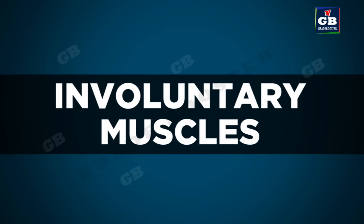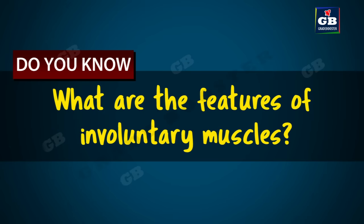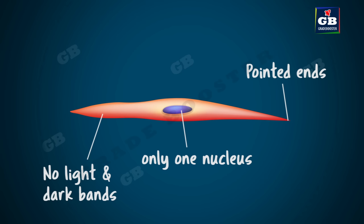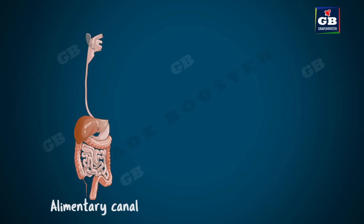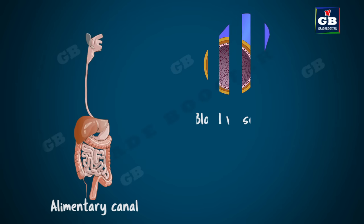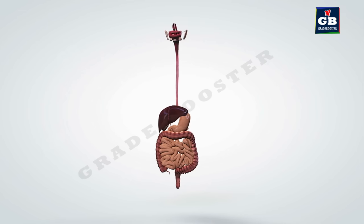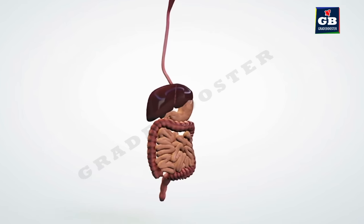Another type of muscular tissue is involuntary muscles. These muscle movements are not under our will, which is why they are called involuntary muscles. The cells are long with pointed ends — spindle-shaped and uninucleated, meaning only one nucleus per cell. There are no dark and light bands, so they are also called unstriated muscles. Involuntary muscles are found in the alimentary canal, blood vessels, iris of the eye, urinary bladder, uterus, and bronchi of lungs. They carry out involuntary movements like movement of food in the alimentary canal and contraction of blood vessels.